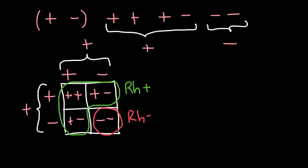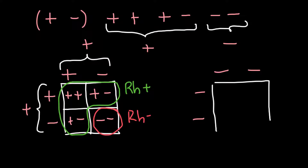The other question was: can two Rh negative parents give rise to an Rh positive child? As you can see, if we build a Punnett square, this is not possible. If both parents are Rh negative, 100% of their children would also be Rh negative.